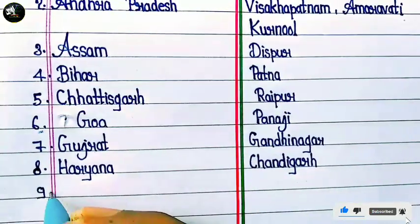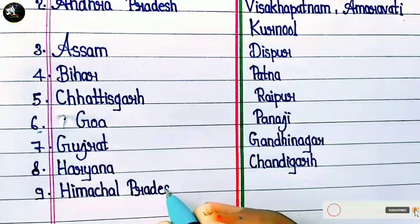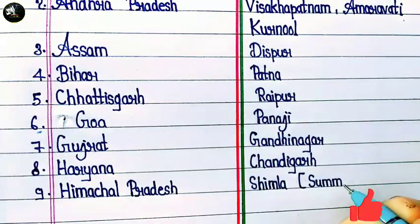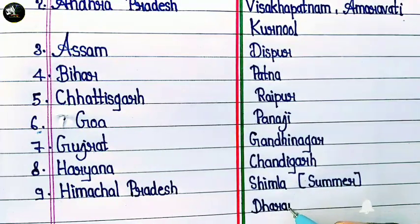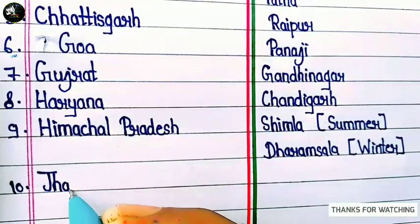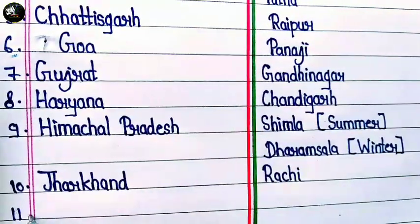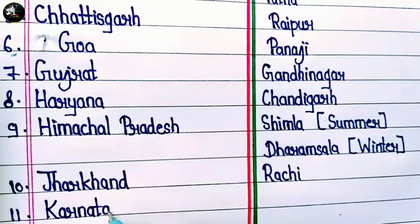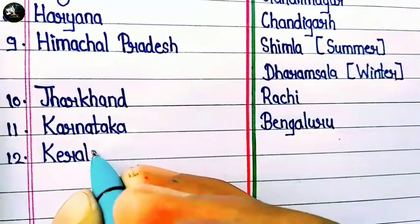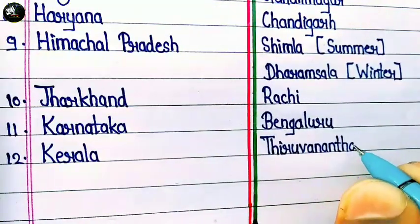And next is Himachal Pradesh and the capital is Shimla in Summer and Dharamsala in Winter. Next is Jharkhand and their capital is Ranchi. And then Karnataka and their capital is Bengaluru. And Kerala and their capital is Thiruvananthapuram.